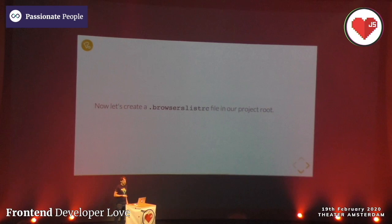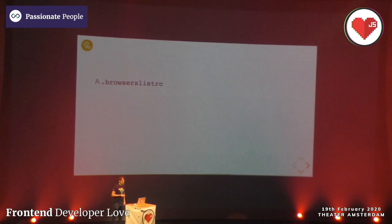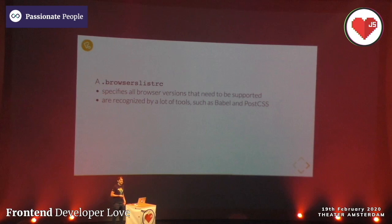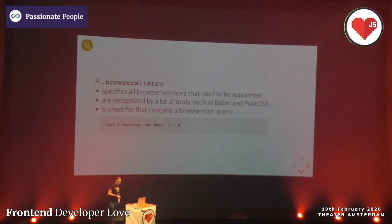Let's create the .browserslistrc file. Please make sure you spell 'browsers' correctly with an 'S' - once in a project I wrote 'browser list rc' without the S and wondered why it wasn't working. Make sure it has the correct name and is in your project root where the package.json is. A .browserslistrc specifies all browser versions that need to be supported, and is recognized by many tools like Babel and PostCSS. It's a text file containing browserslist queries - in this case we support the last two versions of popular browsers, exclude some no-longer-supported ones, but somehow have to support IE 9.